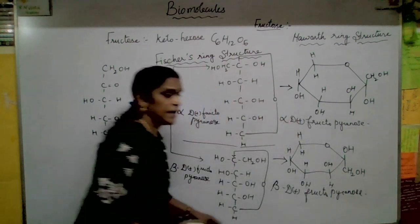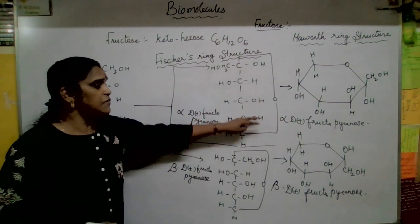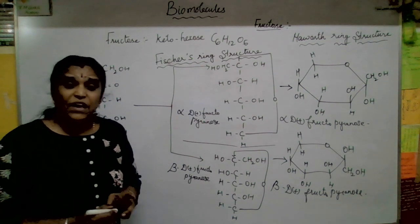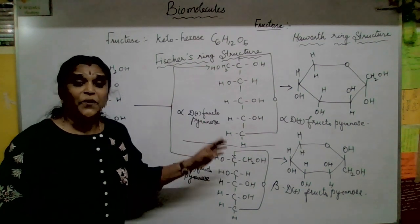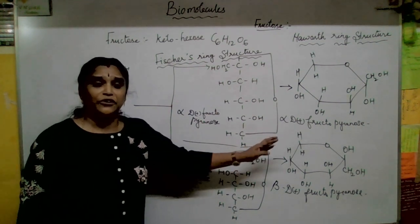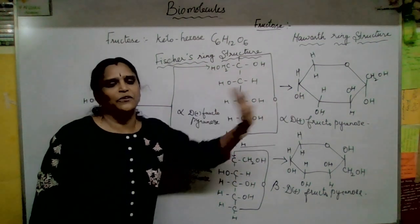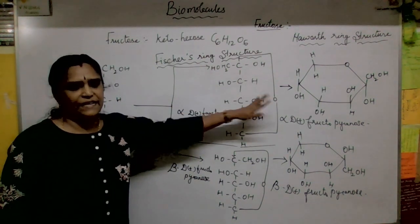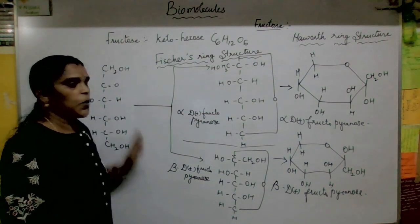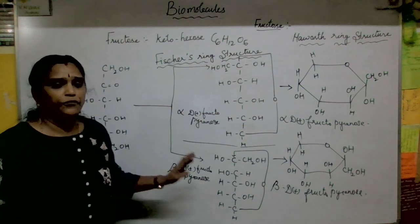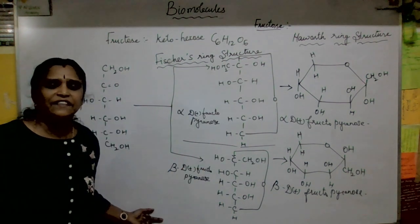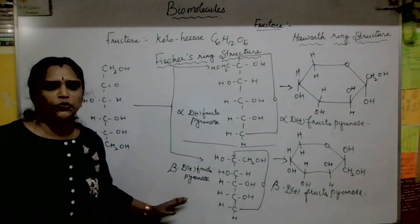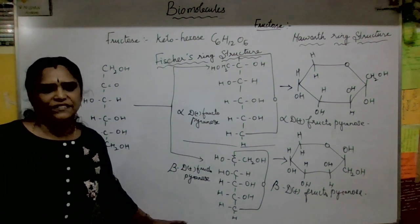Now suppose if it is beta-D-plus-fructopyranose - how will you do that? Same easy. Now oxygen will be there in the same place. Now where that OH will be going to attach - I hope you know very well. This OH will be represented here as CH₂OH, because it is beta. See, the same thing: right-hand side OH present means alpha; left-hand side OH present means beta - so simple. Now the same: OH, OH, and here H OH, and then H and H - the first carbon, actually the keto group carbon, has changed. So this is beta-D-plus-fructopyranose. Hope you are clear with alpha and beta fructopyranose.